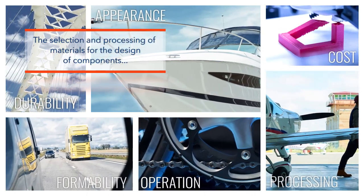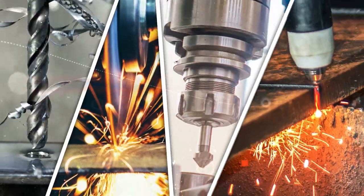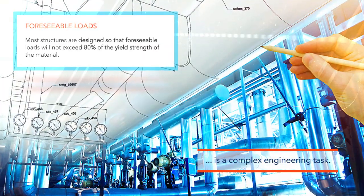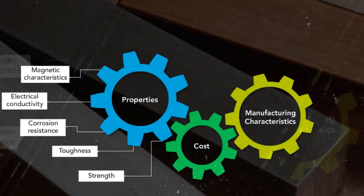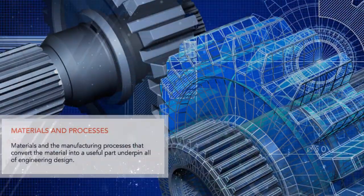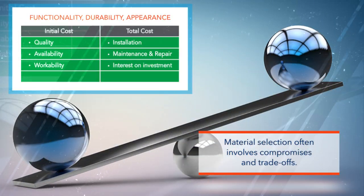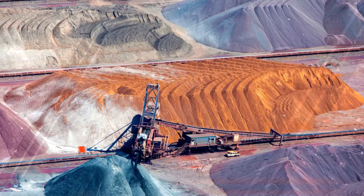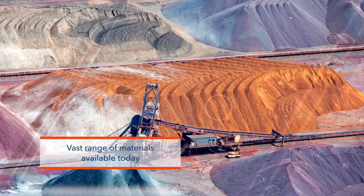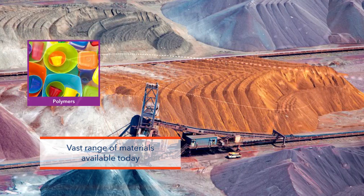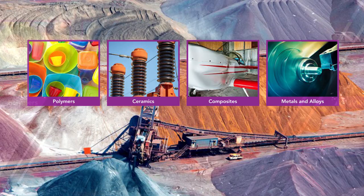The selection and processing of materials for the design of components is a complex engineering task. It requires the consideration of many interrelated factors and often involves compromises and trade-offs. You will learn about the vast range of new age materials available today, such as polymers, ceramics, and composites, in addition to metals and alloys.